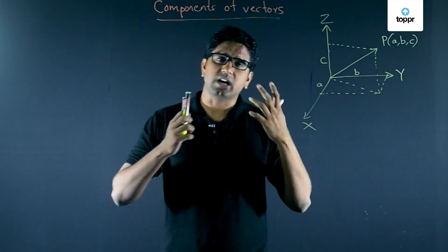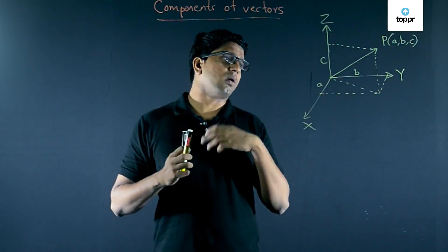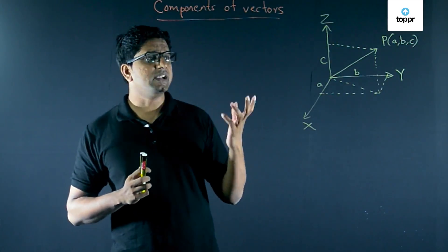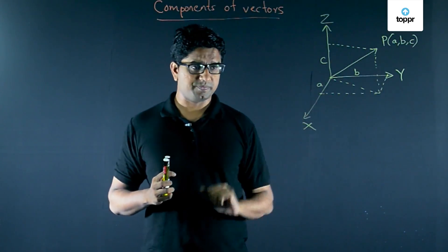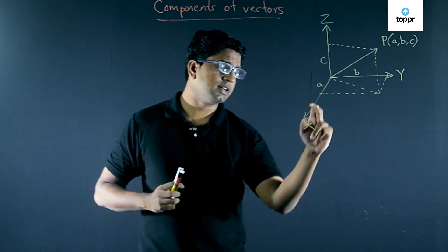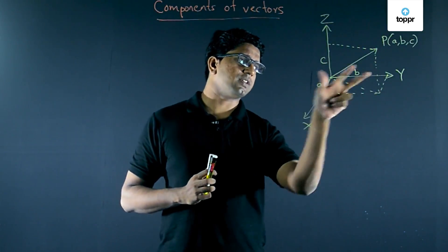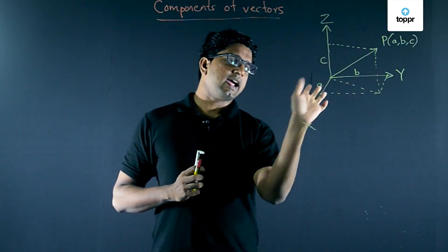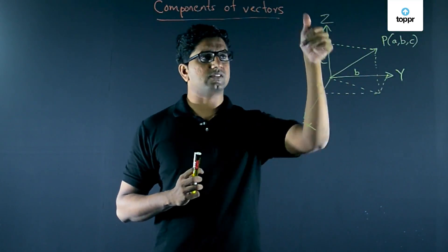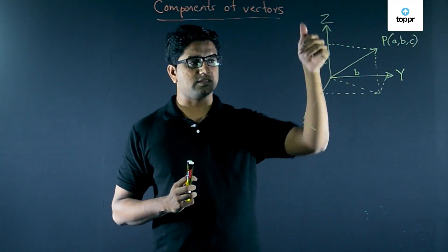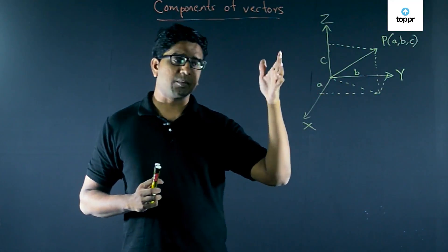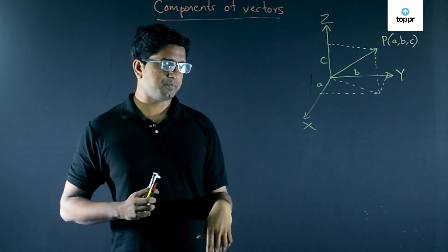Let us start with something we are already familiar with: the three-dimensional right-handed coordinate system. As drawn here, you have the x-axis, the y-axis, and if you turn your fingers from x to y-axis, you point in the z-axis — hence it is a three-dimensional right-handed coordinate system.